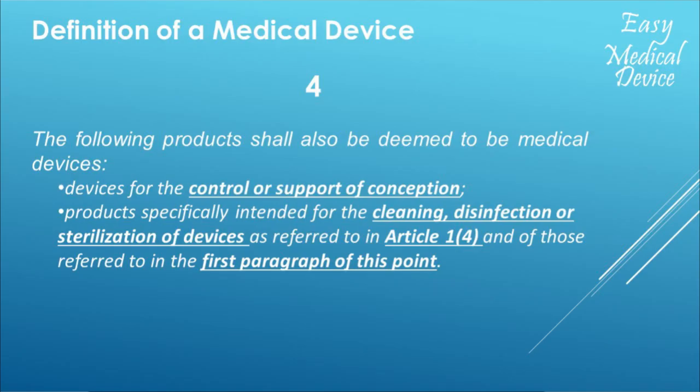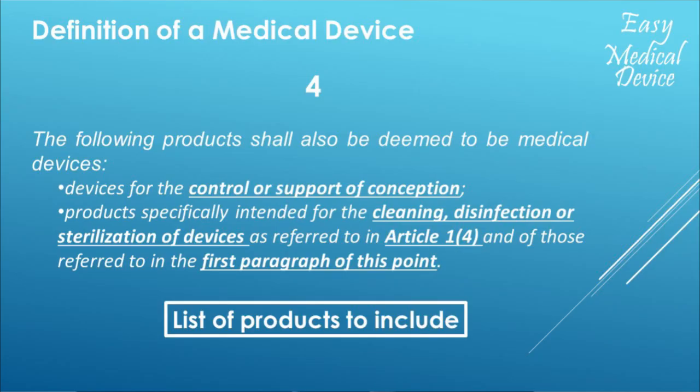We arrive at the fourth block. It says: 'The following products shall also be deemed to be medical devices.' Which products? Devices for the control or support of conception, and products specifically intended for the cleaning, disinfection or sterilization of devices as referred to in Article 1, Paragraph 4. So mainly products used for cleaning, disinfection or sterilization of devices. I reduced this to: a list of products to include. You will see later that there is a full annex of additional products with no medical purpose that we should also include.